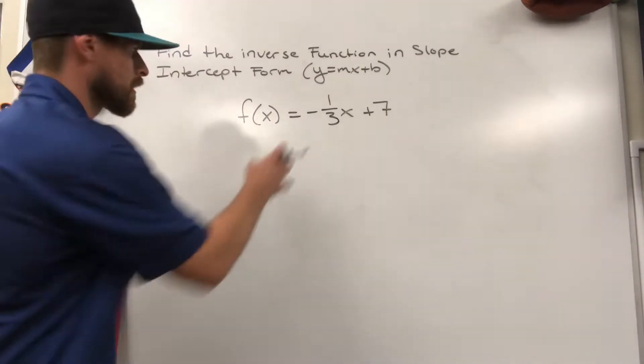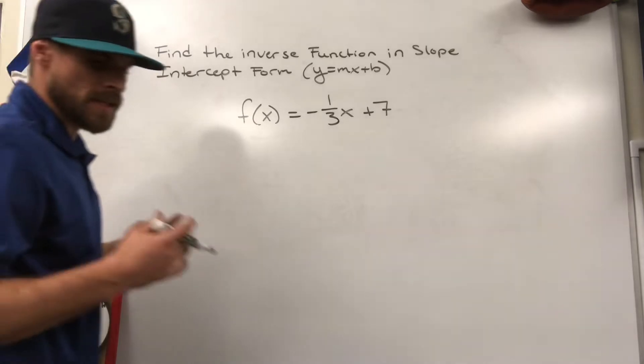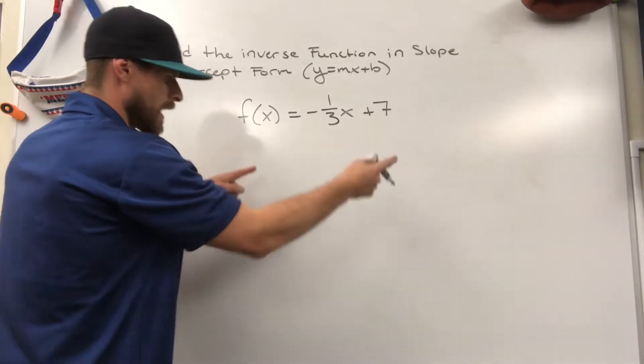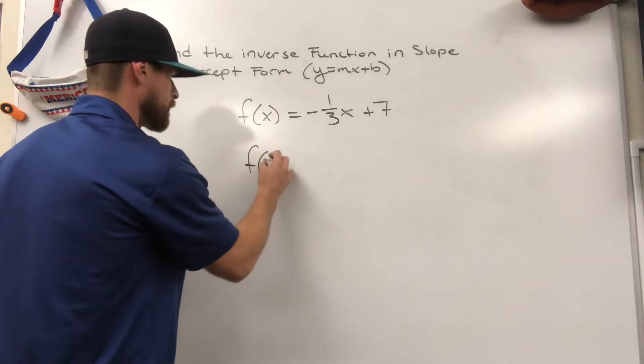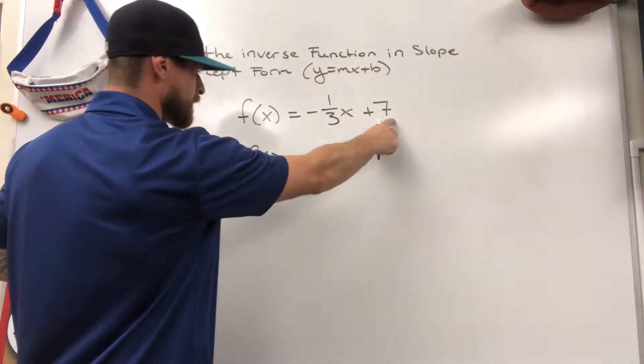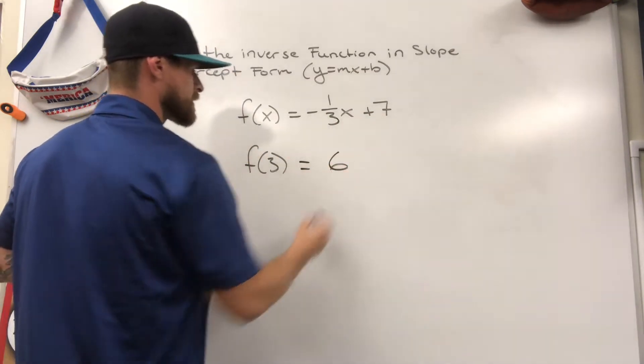So we're going to invert the function. All that means is this: If I put a value in for x and work it out and get an output, for example, f of three in this case, if I put a three right there, multiply it by negative one-third and add seven, the output comes out to six.